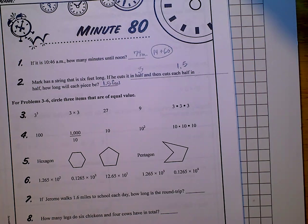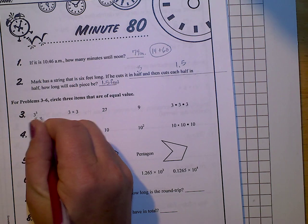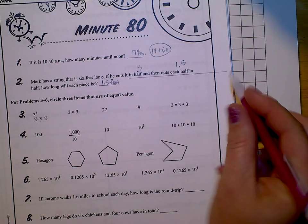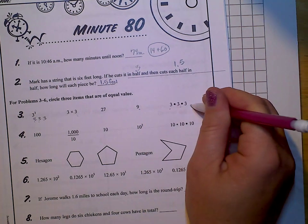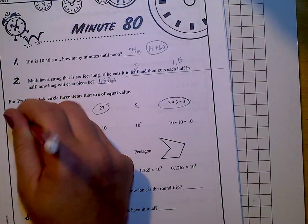For problems 3 through 6, circle 3 items that are of equal value. So 3³ is the same as 3 times 3 times 3. 3 times 3 is 9, 9 times 3 is 27. So that is not 27, that's 27, that's 9, this is 20, that's the same. That one's the same, this one's the same, and that one's the same.